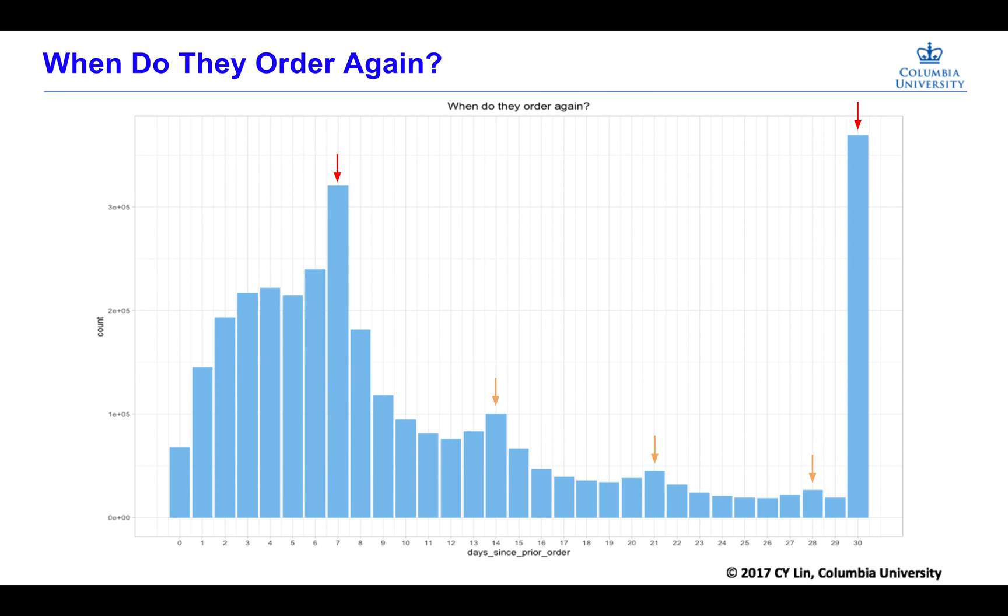We also made a histogram about days since prior order. We can see that customers will come back and use Instacart in about 7 days and in 30 days. Also, there are some sub-peak numbers like 14 days, 21 days, 28 days. It's easy to see that customers will come back and reorder on a weekly basis or monthly basis.